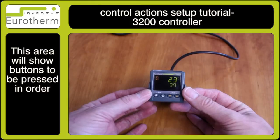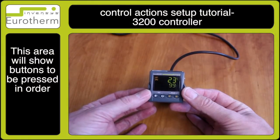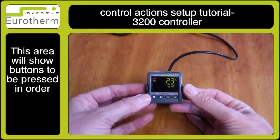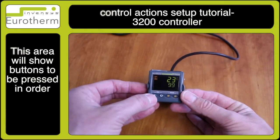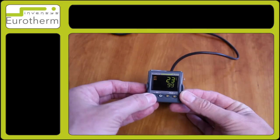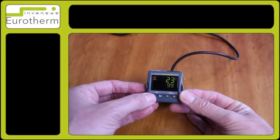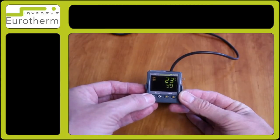In this demonstration I will show how to set up a control action for a particular application. If you wish your instrument to produce an output when the set point is above the process variable temperature, you will need to use reverse acting control.